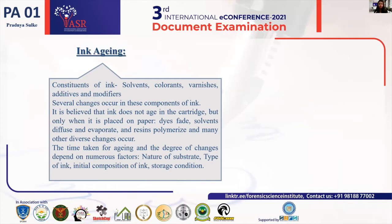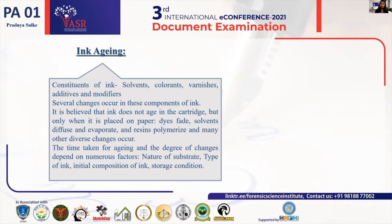Regarding ink aging: when ink is placed onto paper, several changes start commencing, such as evaporation of solvents, degradation of dyes, hardening and polymerization of resins, and many other changes. These changes are affected by external factors such as storing conditions and the substrate — the type and nature of paper — on which the ink is placed. Thus, when dating a document using ink aging, experts should always keep in mind the conditions affecting the aging process. Several analytical techniques can determine these aging changes, such as ICP, GC, and MS, depending on which parameter is being studied — different techniques are used for studying solvent evaporation versus polymerization of resins.